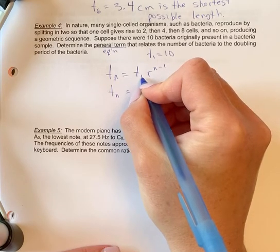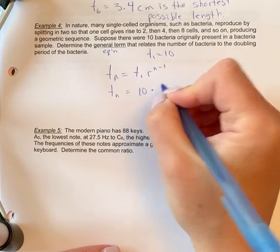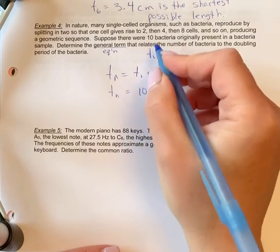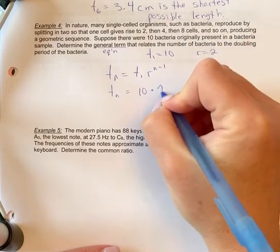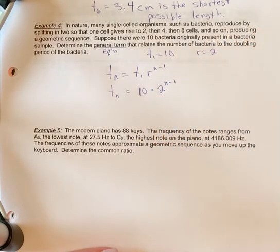Your term one is 10, and your ratio—sorry, not your n value, we don't know n—your ratio is that it doubles, so your r value is two. So two to the n minus one. That's as far as you need to go on this question.